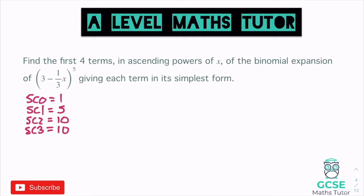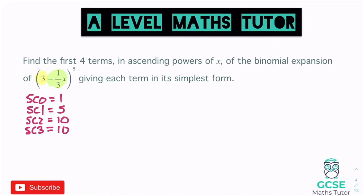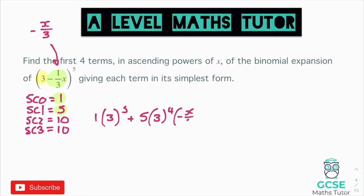So that's how many lots of each we're going to have. The first piece in our pattern is three, and the second piece is negative one-third x — or we could write it as negative x over three. I might write it as negative x over three to make the terms a little easier. So we have one lot of three to the power of five, then five lots of three to the power of four times negative x over three.